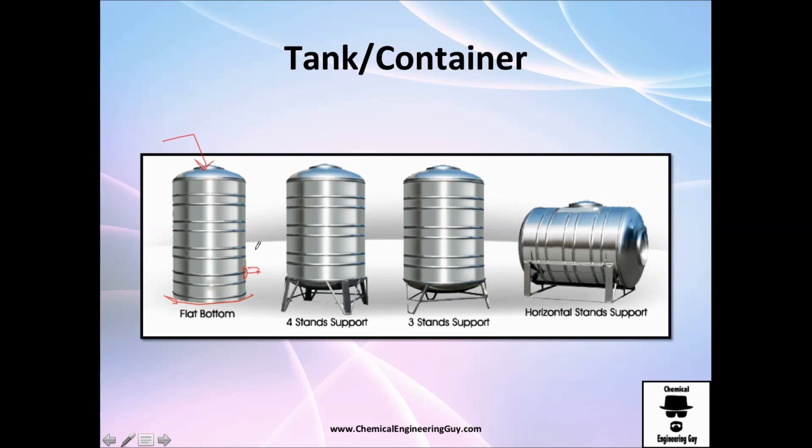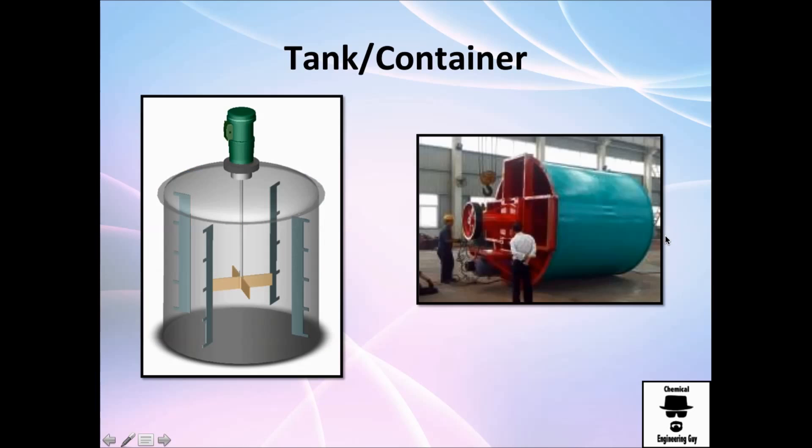You have it for support, for example, easy to install pipes right here. You may use it horizontal. You have the baffles right here also. You want a container or vessel that supports the motor, the inlet pipe, outlet pipe, and baffles. The sizes are from small containers to huge containers. This I would say is intermediate. You can find huge, very huge tanks of agitation.